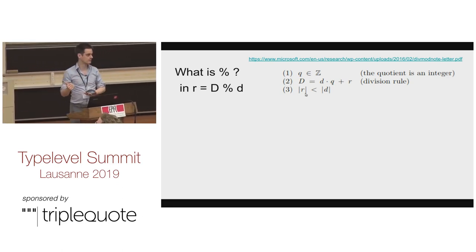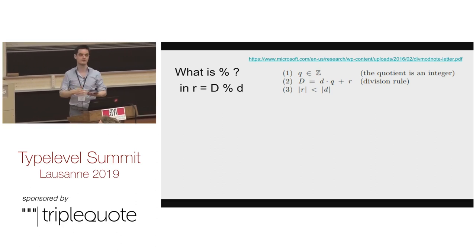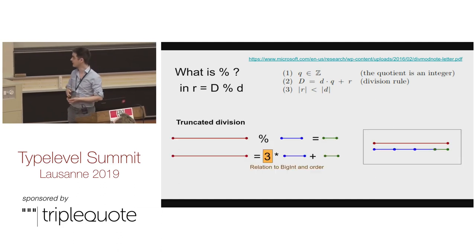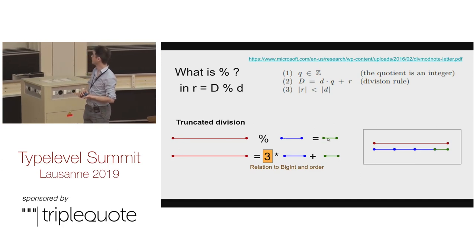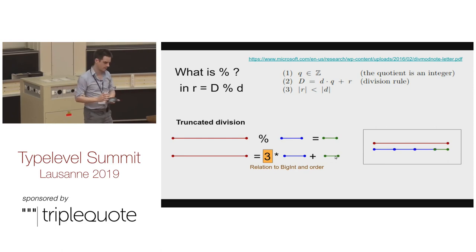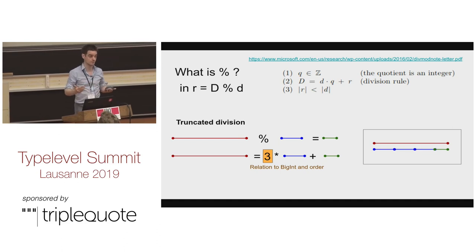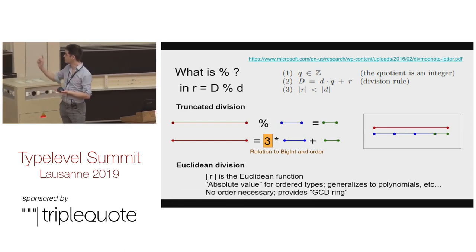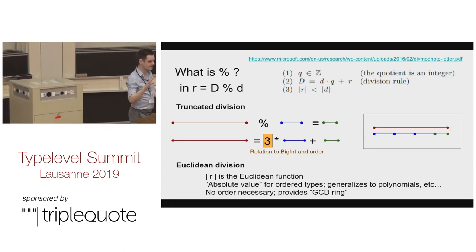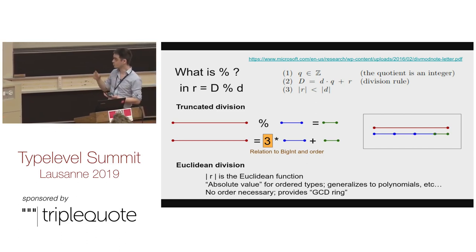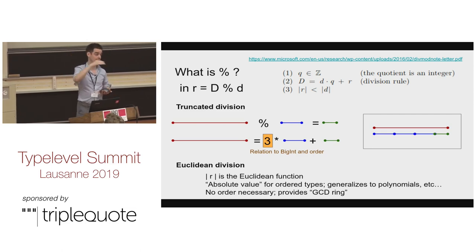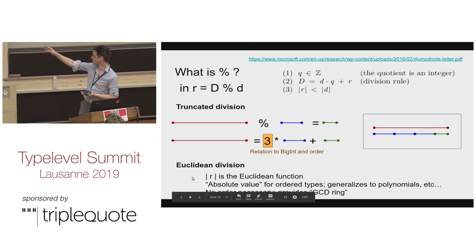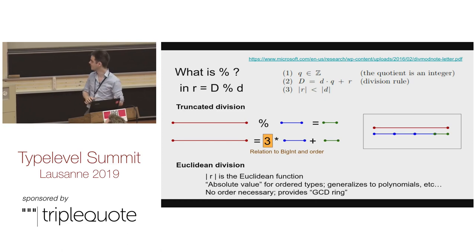So we have two interpretations. The first is truncated division: I divide the red line by the blue line, I can fit three times the blue thing in the red thing, and this green part remains. To do that, I need a notion of comparing lengths — I need an order. The other notion is Euclidean division, which is very abstract. There you have a Euclidean function which matches the definition for integers. For polynomials, the Euclidean function is the polynomial degree. For x cubed, x squared, or x alone, you take the biggest one — that's your Euclidean function. You don't need an order.